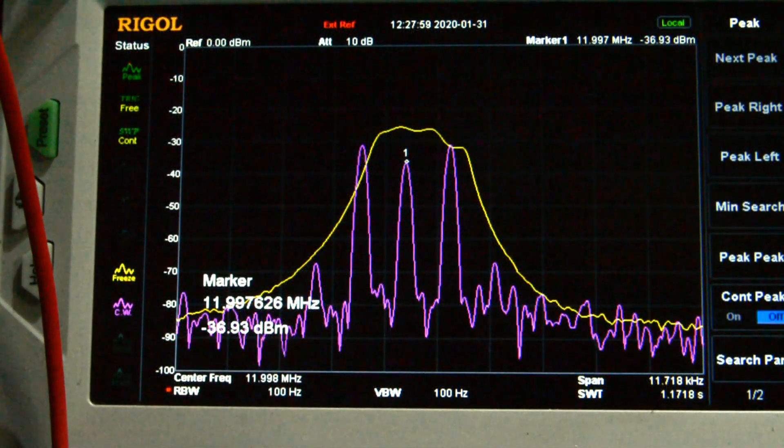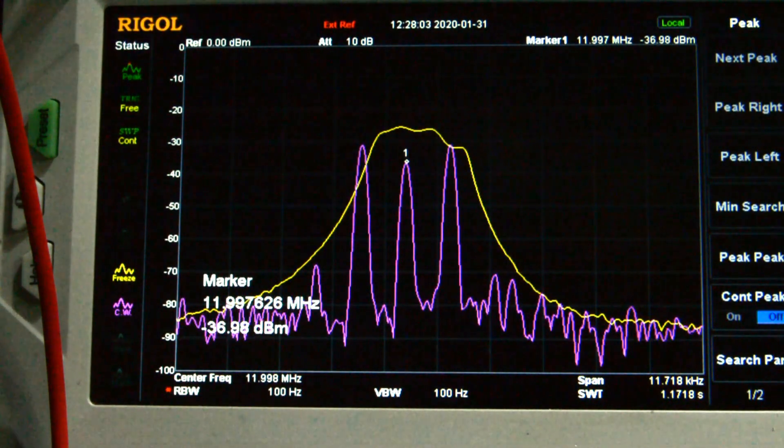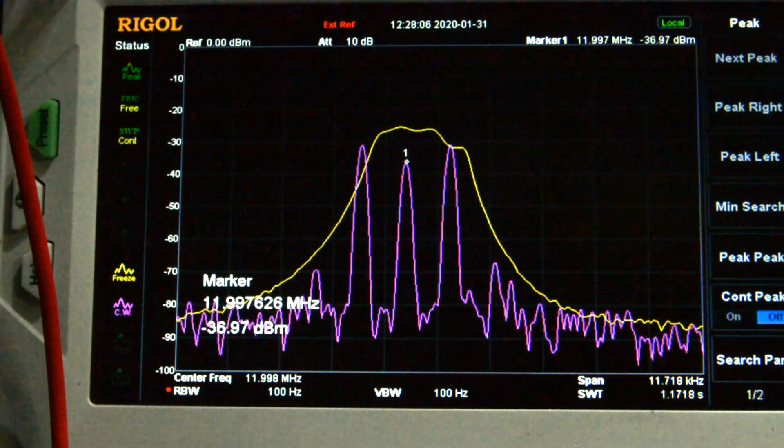I've got a one kilohertz audio signal going into the microphone amplifier. The output of the mic amp is going into the balanced modulator.